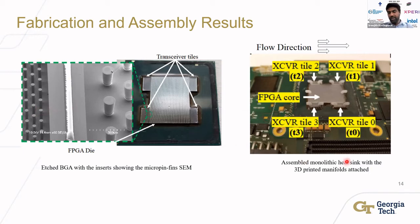Post-fabrication images show sparser micro-pin fins over the FPGA region due to its lower power density, while the transceiver regions — though smaller — have much higher power densities and thus increased micro-pin-fin density. The right-side images show the assembled device on the development board with 3D-printed fluid inlet and outlet connections.